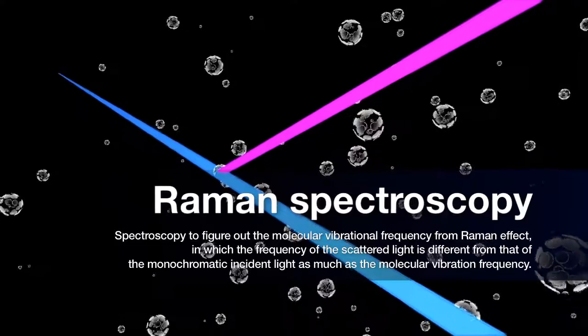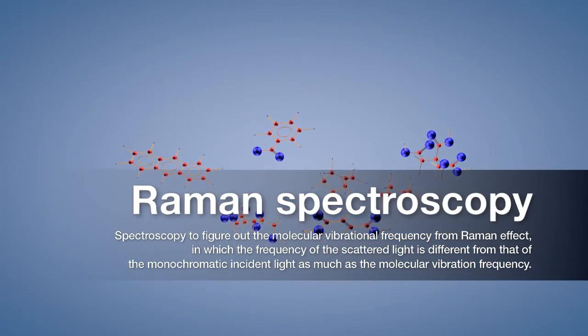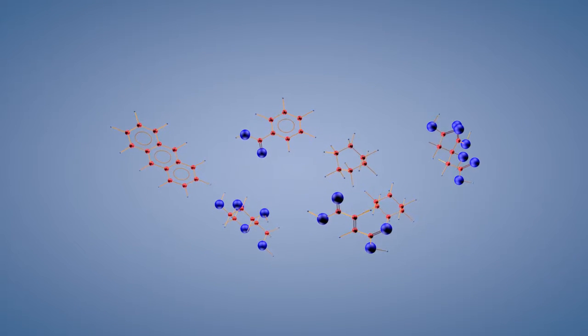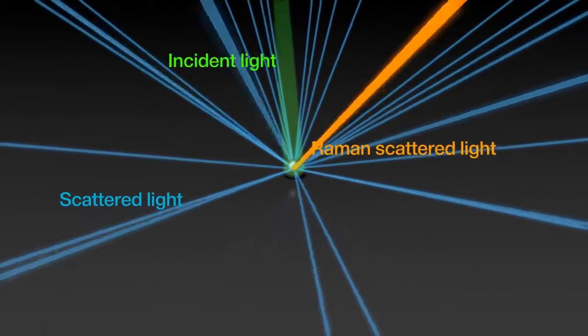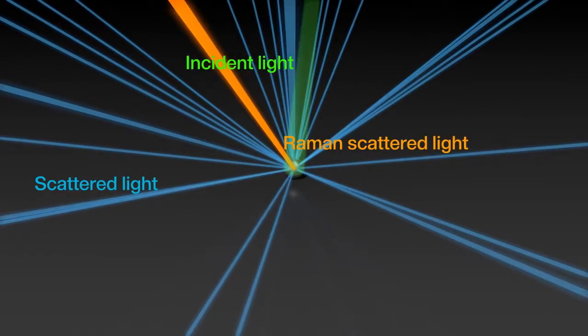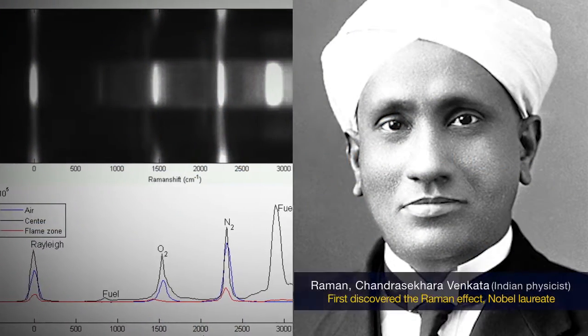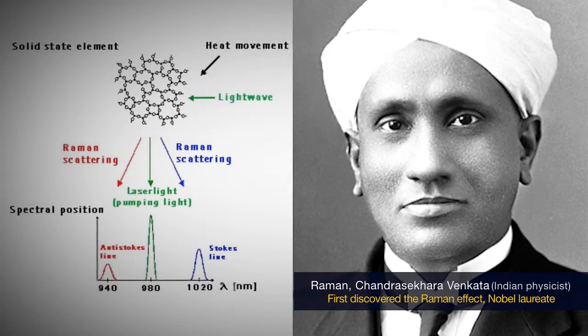Raman spectroscopy is an important research area that can provide crucial chemical information of molecular composition and structure. In the 1920s, Sir Raman discovered that when light traverses through a material, some of the deflected light changes in wavelength. This phenomenon, now called Raman scattering, made him win a Nobel Prize for Physics in 1930.